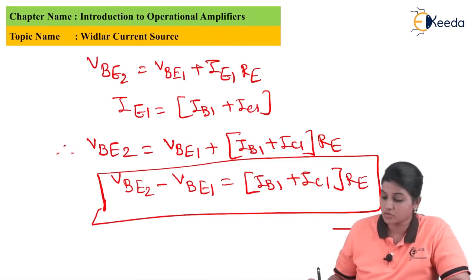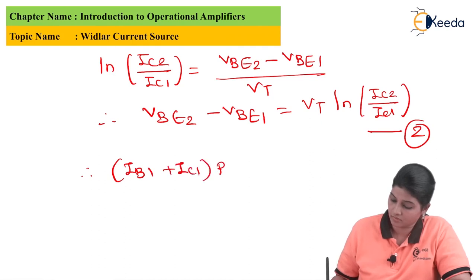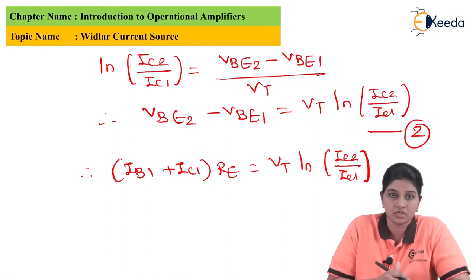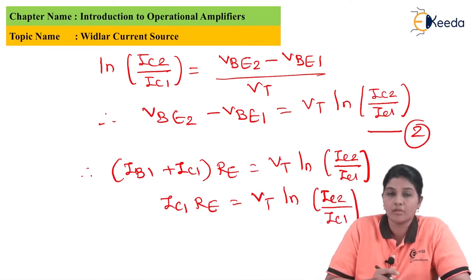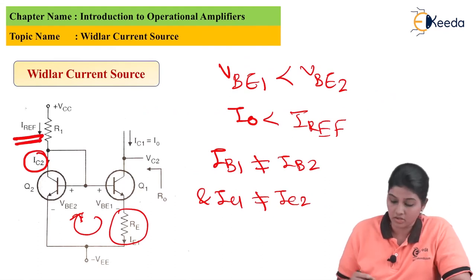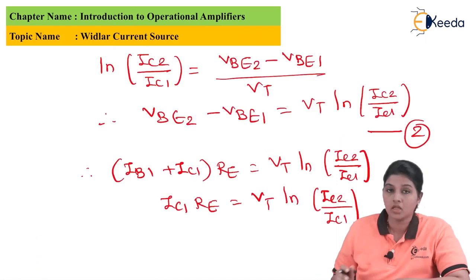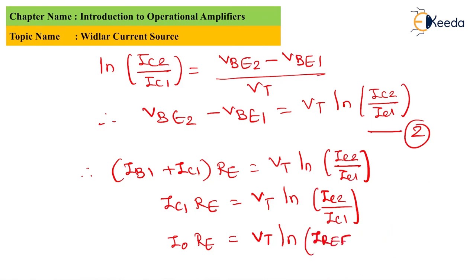Comparing equation 2 with equation 1, we know that V_BE2 minus V_BE1 also equals (I_B1 plus I_C1) times R_E. Substituting this into equation 2, and since the base current is always much less than the collector current, we can neglect I_B1. Looking at the circuit diagram, I_C2 is the reference current and I_C1 is the output current. Therefore, replacing I_C1 with I_O and I_C2 with I_reference, we obtain the final current relationship equation for the Widlar circuit.